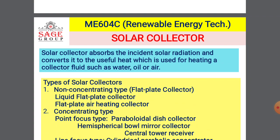Basically, solar energy can be utilized in two ways: the incident solar radiation can be utilized for direct heating, or it can be utilized for generation of electricity by using a solar photovoltaic system. A solar collector is a type of device which utilizes or absorbs the solar energy and transfers it to another medium like water, oil, or air for heating, cooling, or energy generation purposes. So a solar collector absorbs the incident solar radiation and converts it to useful heat which is used for heating a collector fluid such as water, oil, or air.